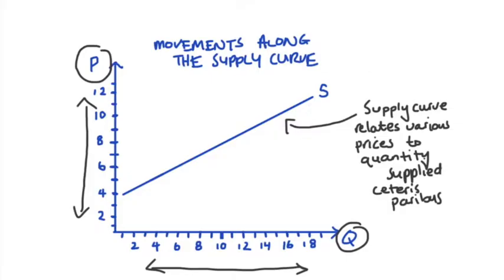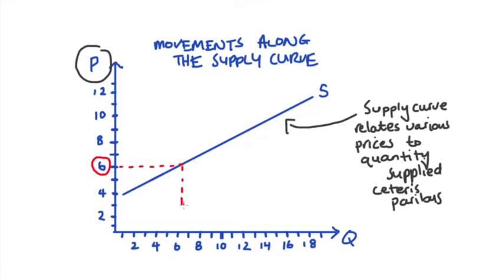It follows from this that the only time when we move along the supply curve is when there has been some change in price. So for instance for the supply curve that I have here, when the price is six dollars, the quantity supplied is equal to six.